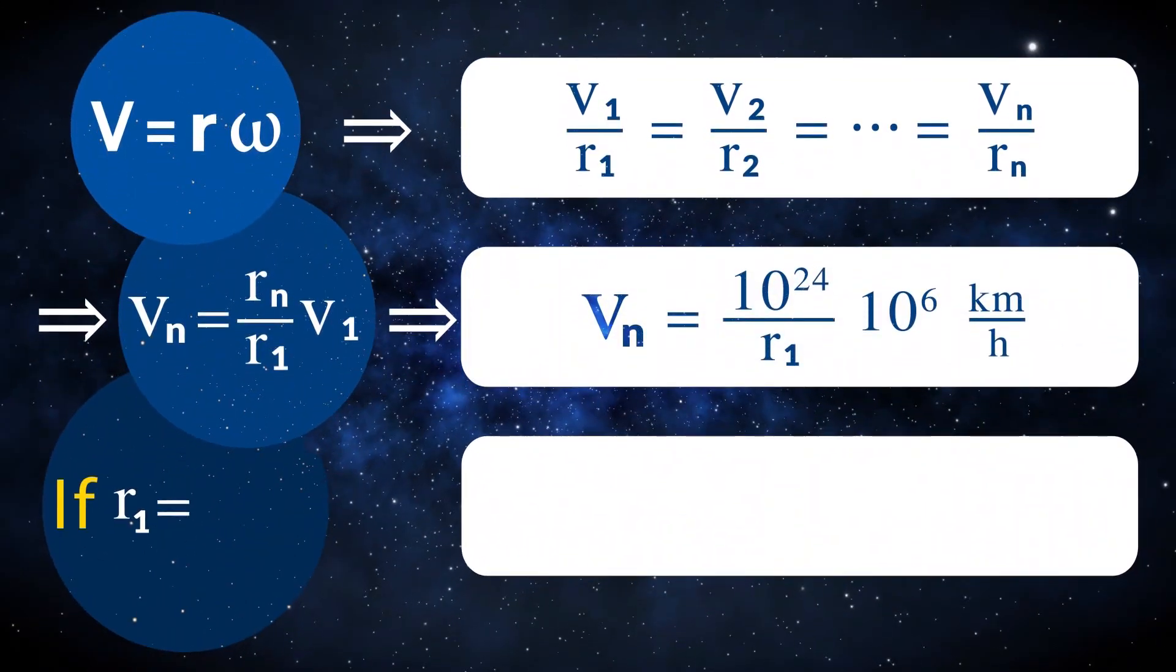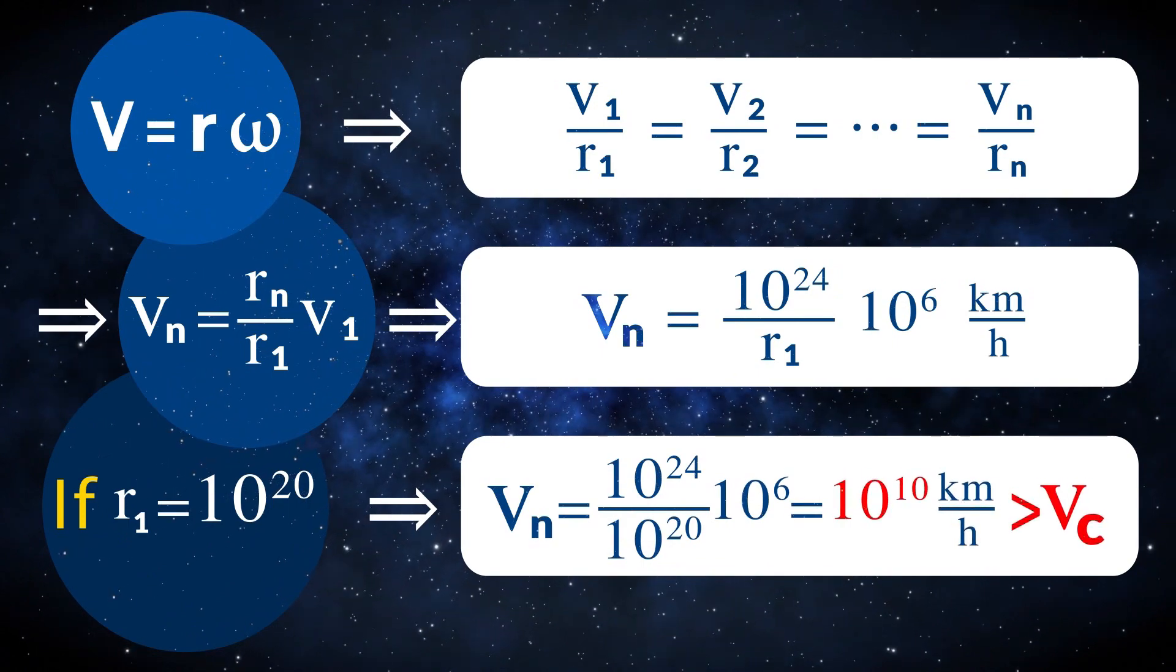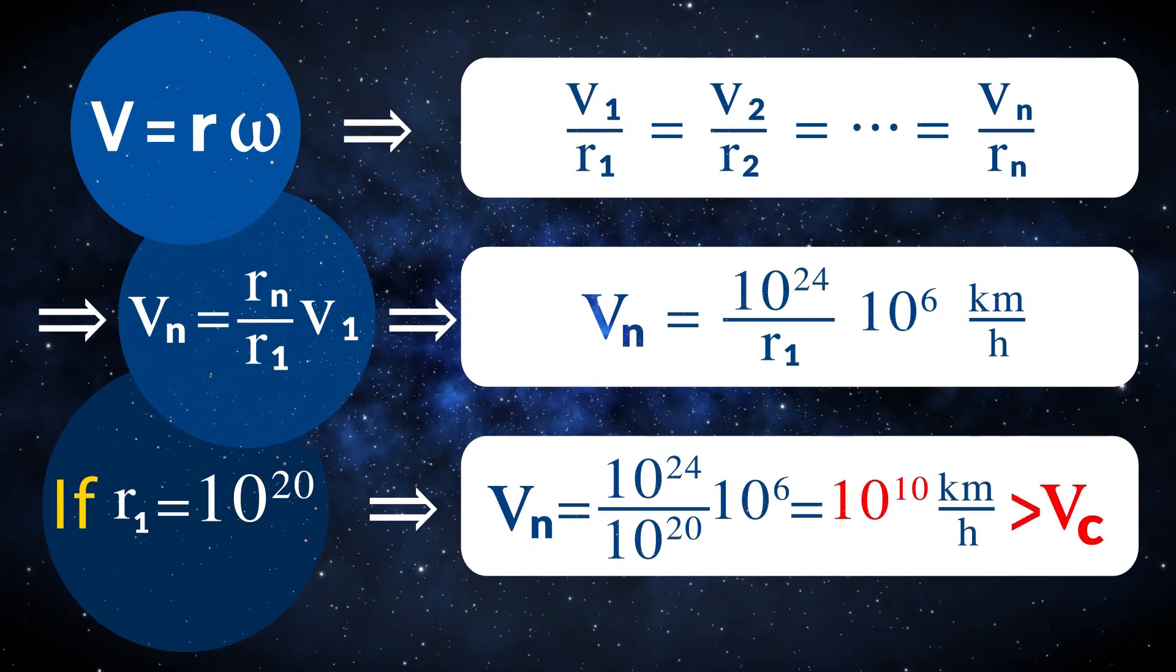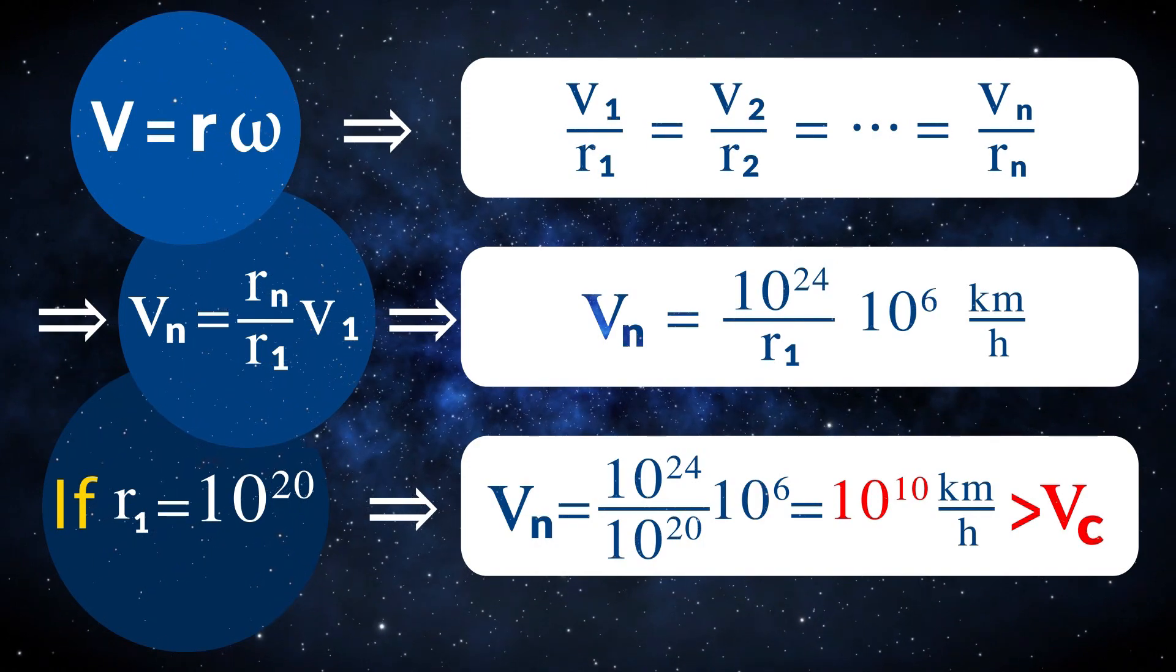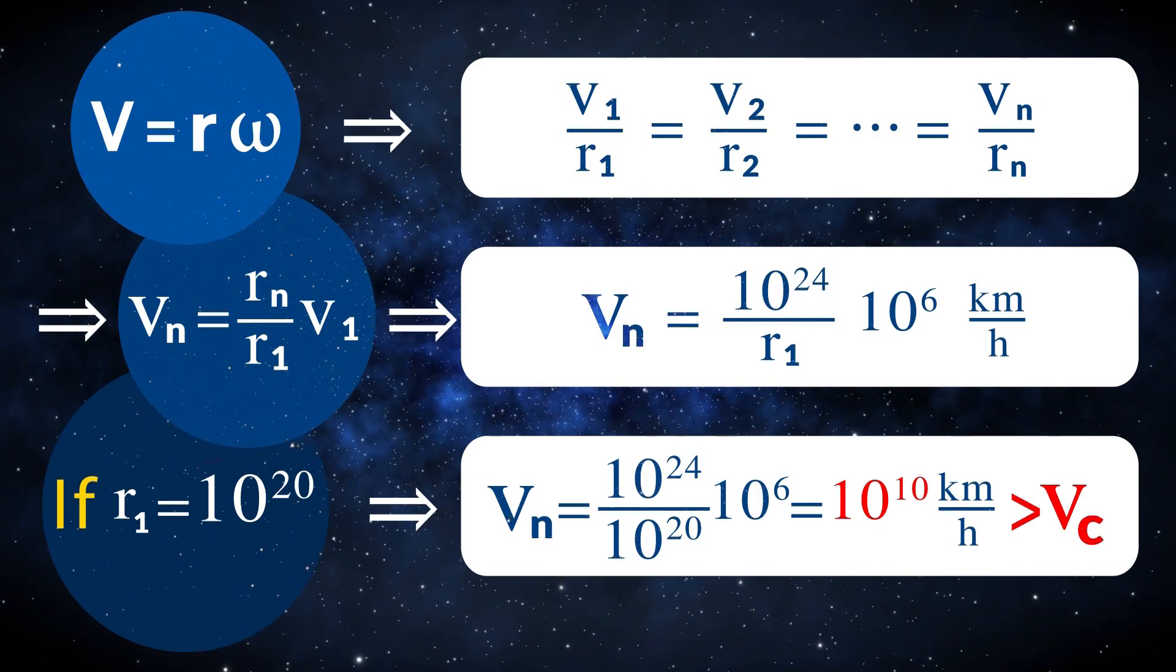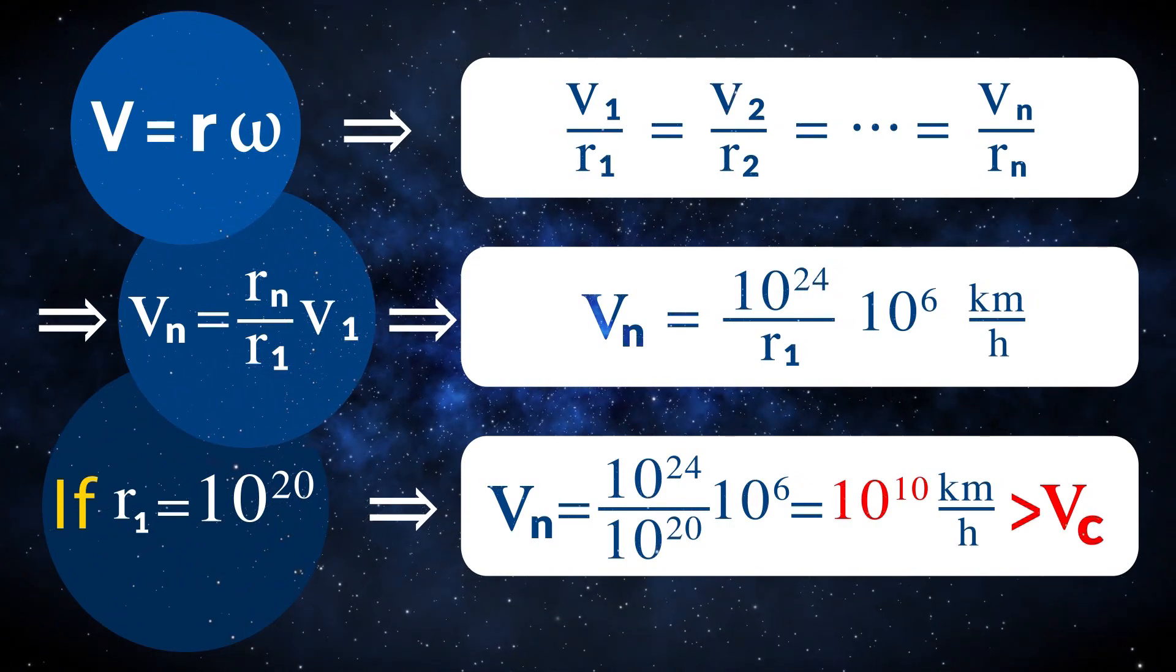Given the above proportion, even the speed of objects which are situated at the distance of 10 to the power of 20 km is more than the speed of light. It should be also noticed that all the values of the proportion are the minimums possible and the speed could be much greater.